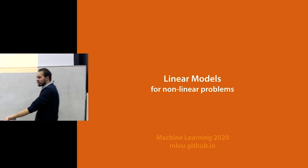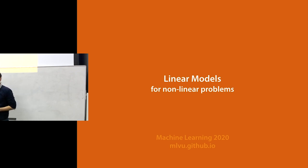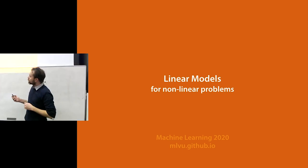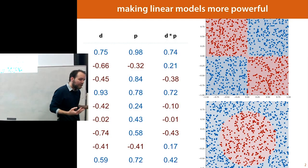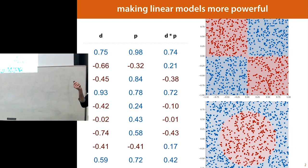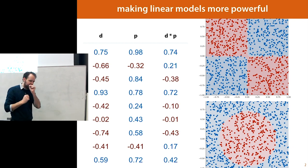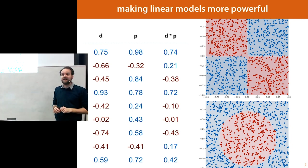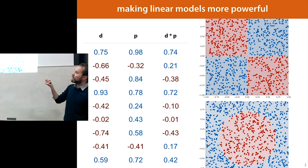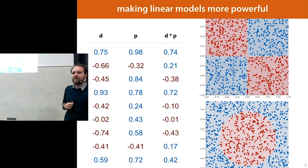What we're going to talk about today is how to use linear models to learn non-linear things. There are two popular ways of doing that, both built on the same principle: if you have a data set that is not linearly separable, you can take the features you have and add new features that are simply computations of the old features. Then if you fit a linear function to this new high-dimensional data set, you can fit a non-linear function in the original space, getting non-linear decision boundaries.